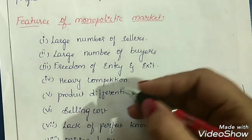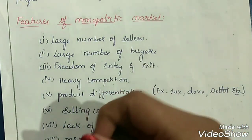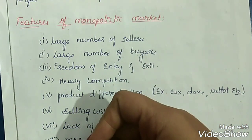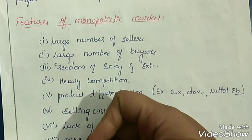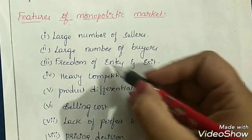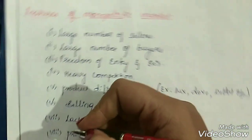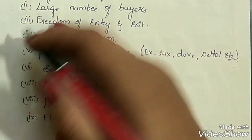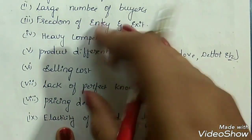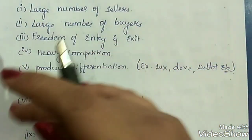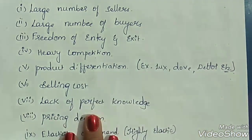Freedom of entry and exit: like perfect competition market, there is freedom of entry and exit for the firms. Any new firm that wants to enter the market can easily do so, and those who want to exit can easily leave. Next, heavy competition: there will be heavy or cutthroat competition between the sellers, because there are a large number of sellers and there is no restriction on entry of new firms. The firms in this type of market face heavy competition among each other.